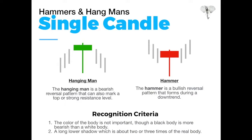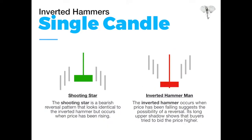Recognition criteria: the color of the body isn't necessarily that important, and the shadow needs to be about three times the size of the real body. Those are the only things to really consider — the candle color doesn't matter too much, and the shadow itself needs to be around three times longer than the actual body itself. These are pretty accurate reversal candles.